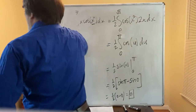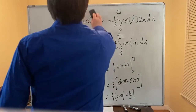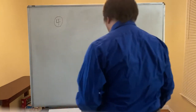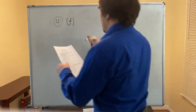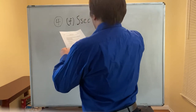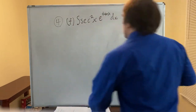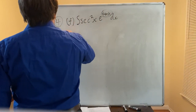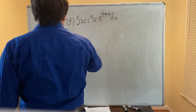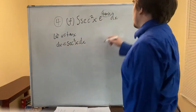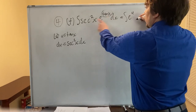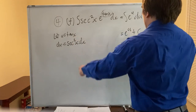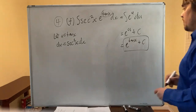Part f: integral of sec²x · e^(tan x) dx. Let u = tan x, then du = sec²x dx. The integral becomes ∫e^u du = e^u + C = e^(tan x) + C. That's the final answer. I hope this helped you for the final — we'll be studying some more, and this is a good start.